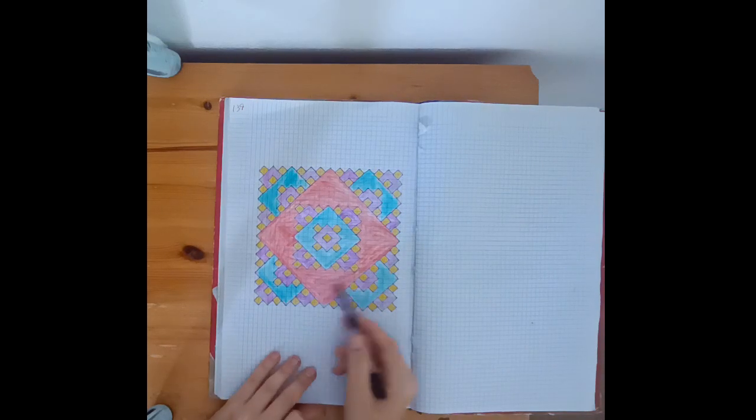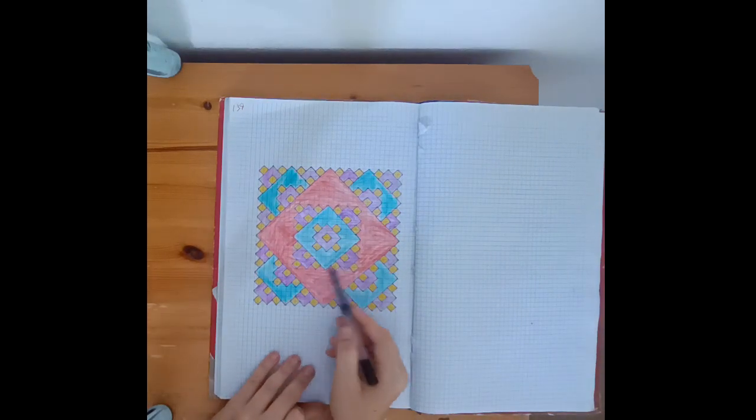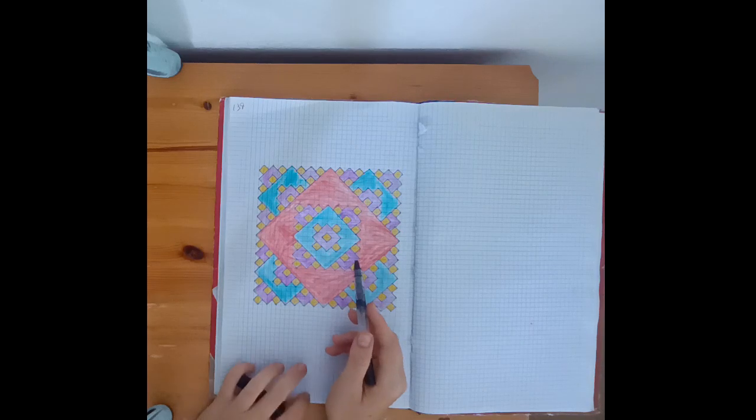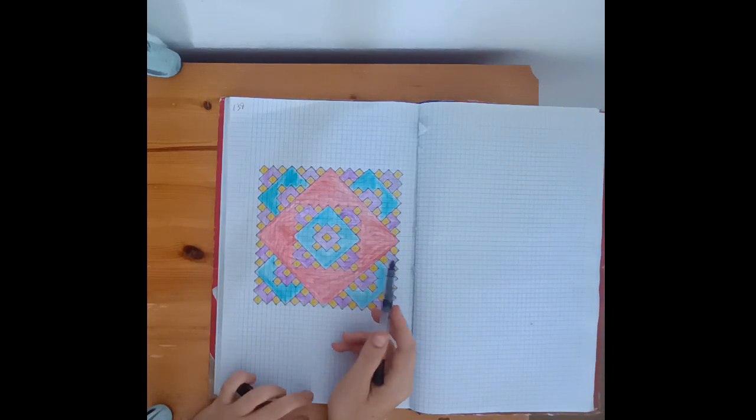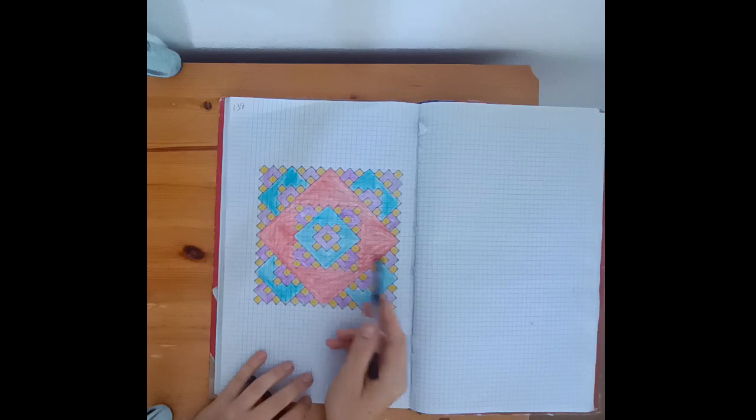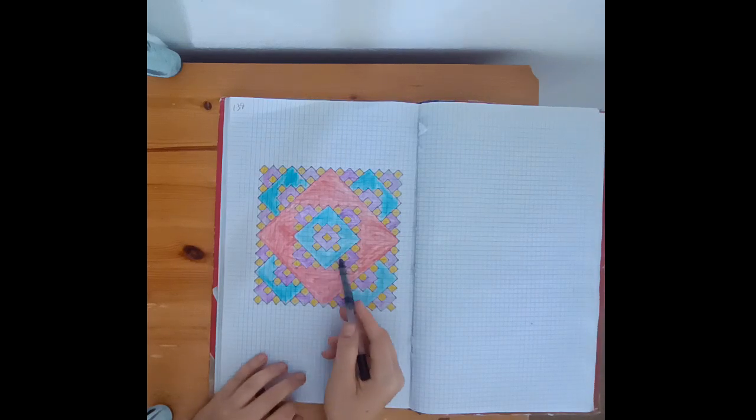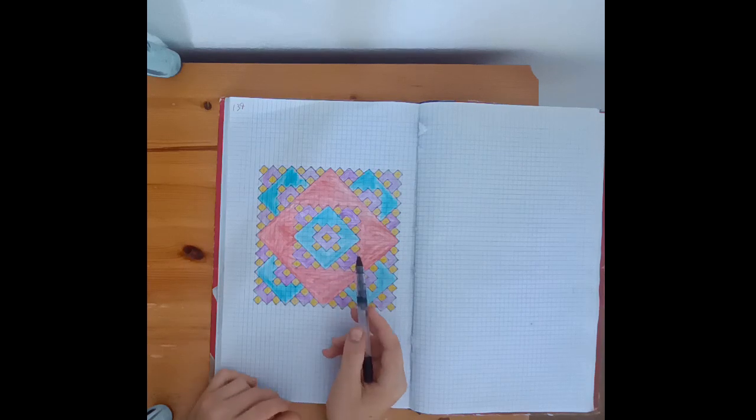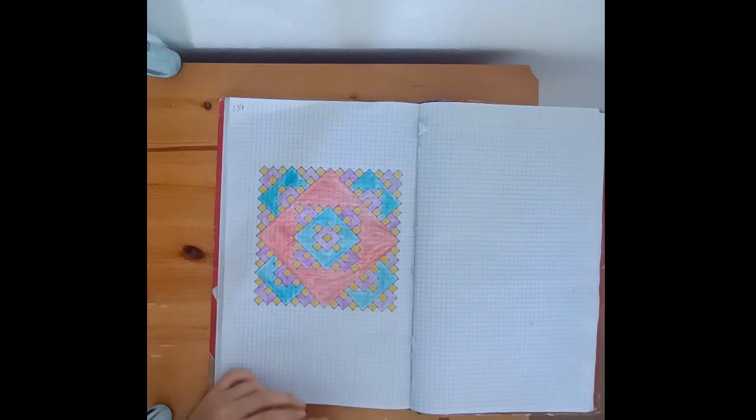So yeah, you can also color it in to make it like this. And yeah, it looks pretty cool. And the number of colors you need is the number of iterations you have. So this is 4 iterations, so I need 1, 2, 3, 4 colors. And yeah, it looks pretty cool.